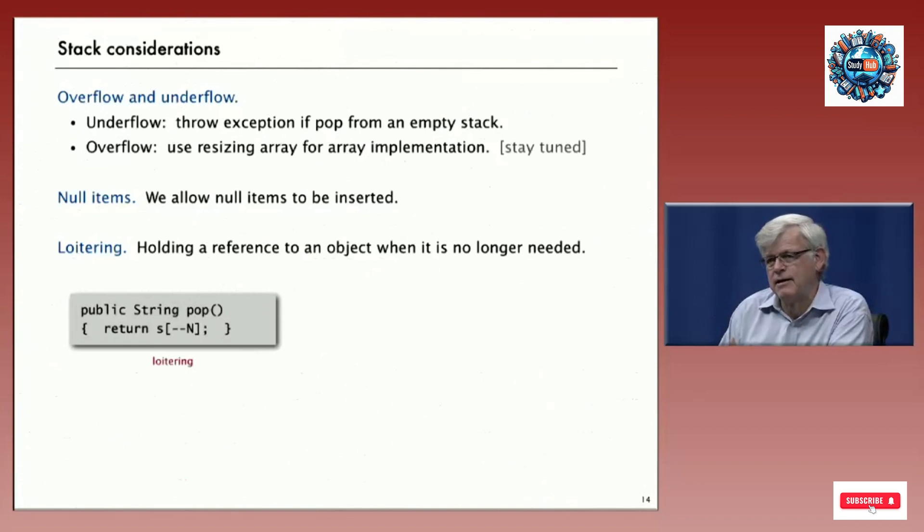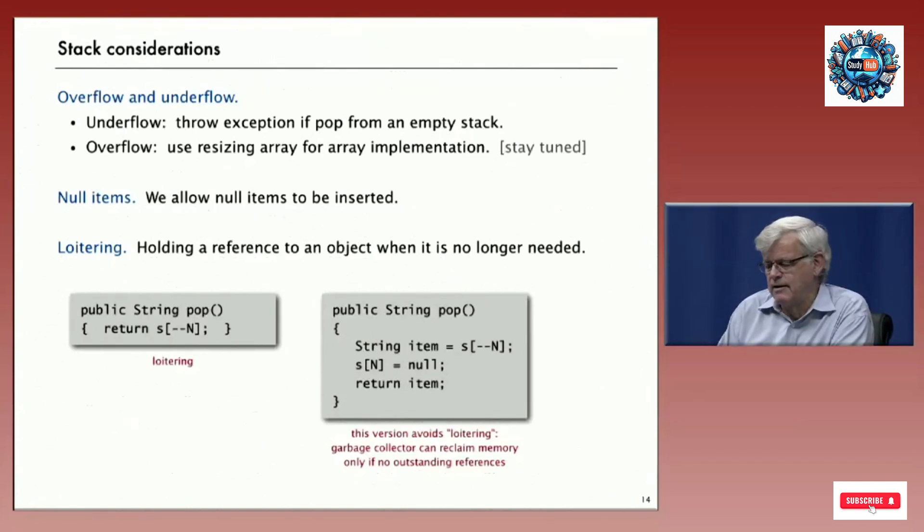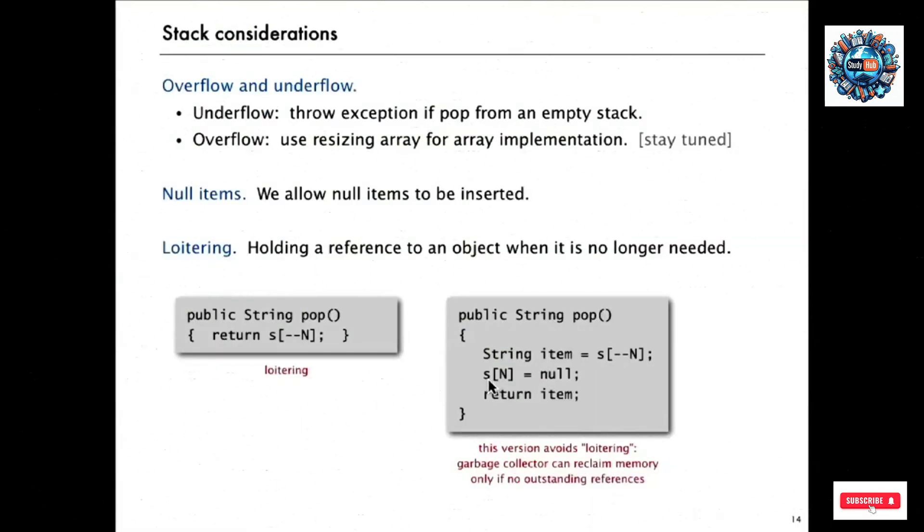But we do have to worry about, in Java, a problem called loitering. That is the idea that we have references to an object in our array implementation in the stack array when we're not really using it. When we decrement that value, there's still a pointer to the thing that we took off the stack in that array, even though we know we're not using it. The Java system doesn't know that. So to avoid that and really allow most efficient use of memory, it's best to set that removed item entry to null so there's no reference to the old item left there. Then the garbage collector can reclaim the memory since there's no outstanding references. That's a detail but an important one that we have to take care of in our implementations to make sure we're getting most efficient use of memory.